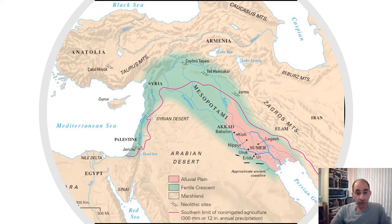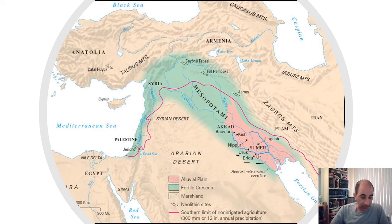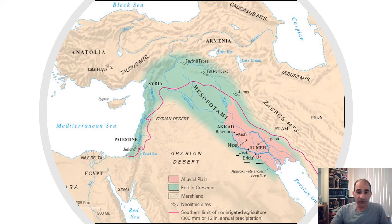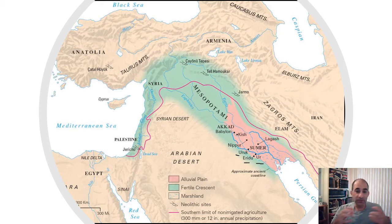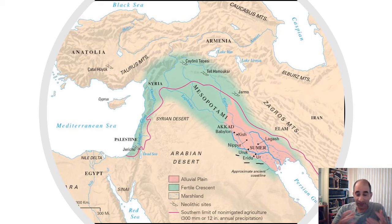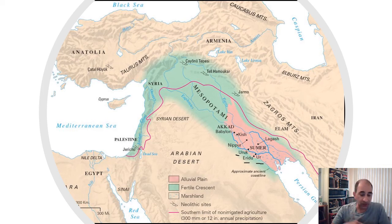Then a new group of people moved into Mesopotamia: the Akkadians. The Akkadians came in from roughly 2400 to about 2100 BC. The only thing you need to know about them is that they displaced the Sumerians from power for a few hundred years. We know this because there appears to be a new language in that region. The Sumerians didn't disappear — they were still there — and in fact, as we get closer to about 2100 BC, the Sumerians return.